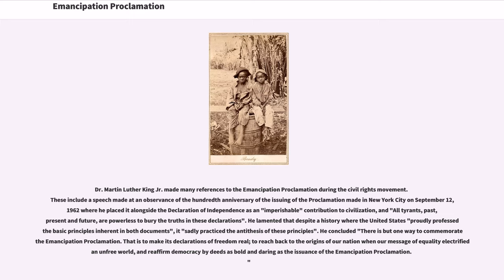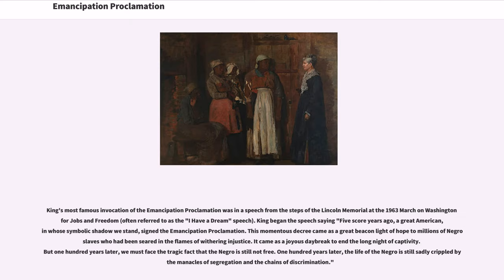He concluded: 'There is but one way to commemorate the Emancipation Proclamation. That is to make its declarations of freedom real, to reach back to the origins of our nation when our message of equality electrified an unfree world, and reaffirm democracy by deeds as bold and daring as the issuance of the Emancipation Proclamation.' King's most famous invocation of the Emancipation Proclamation was in a speech from the steps of the Lincoln Memorial at the 1963 March on Washington for Jobs and Freedom, often referred to as the 'I Have a Dream' speech.